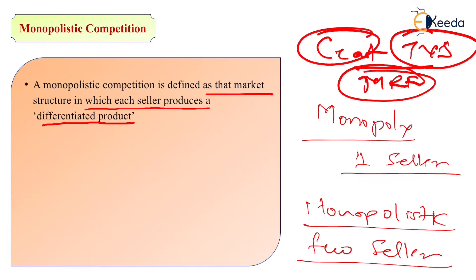These features differentiate the product even though they are being sold by a handful of sellers. The term 'handful' is really important. In monopoly there is just one seller; in monopolistic there are a handful of sellers who sell differentiated products. In perfect competition there are many sellers selling homogeneous products. Here in monopolistic there are handful sellers selling differentiated products — differentiated in terms of features, not the product itself. This situation is known as monopolistic competition.